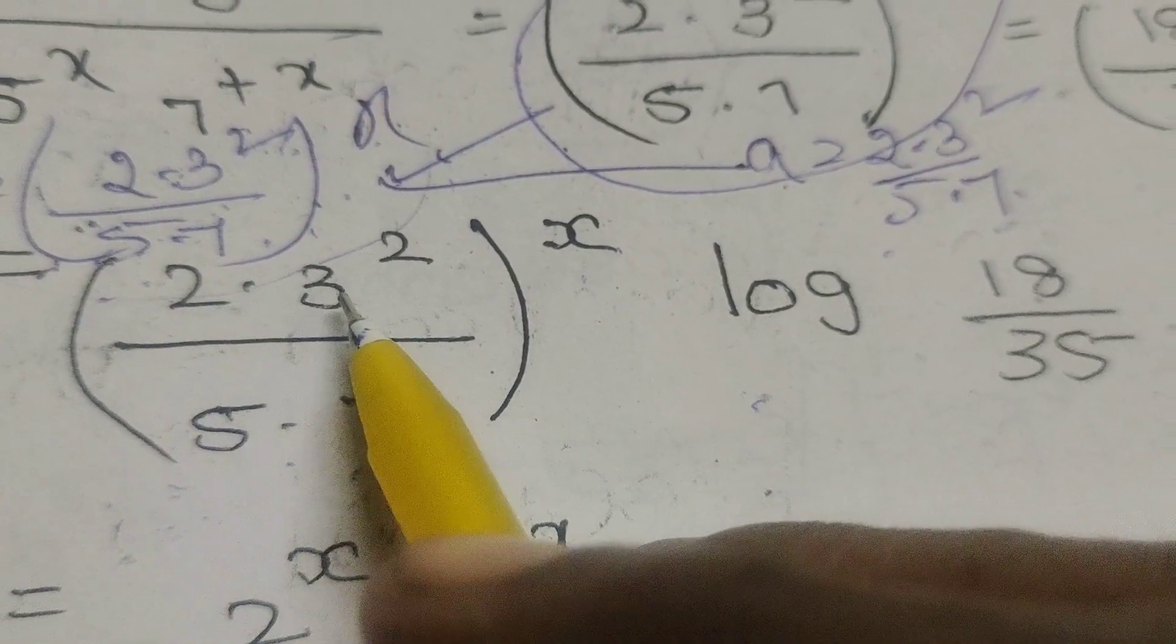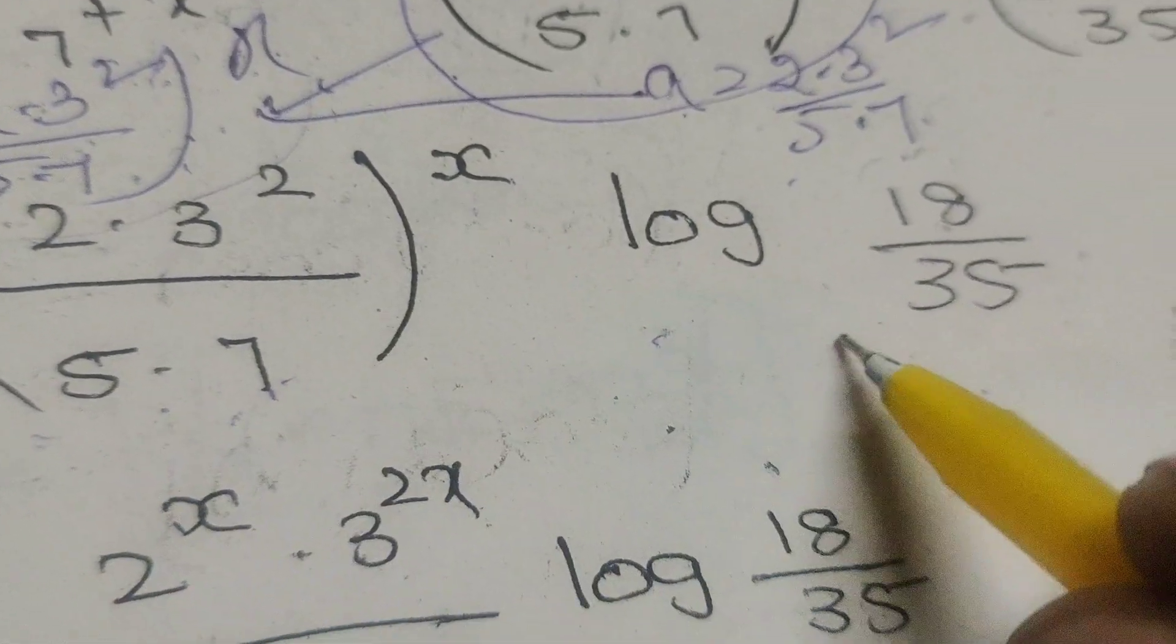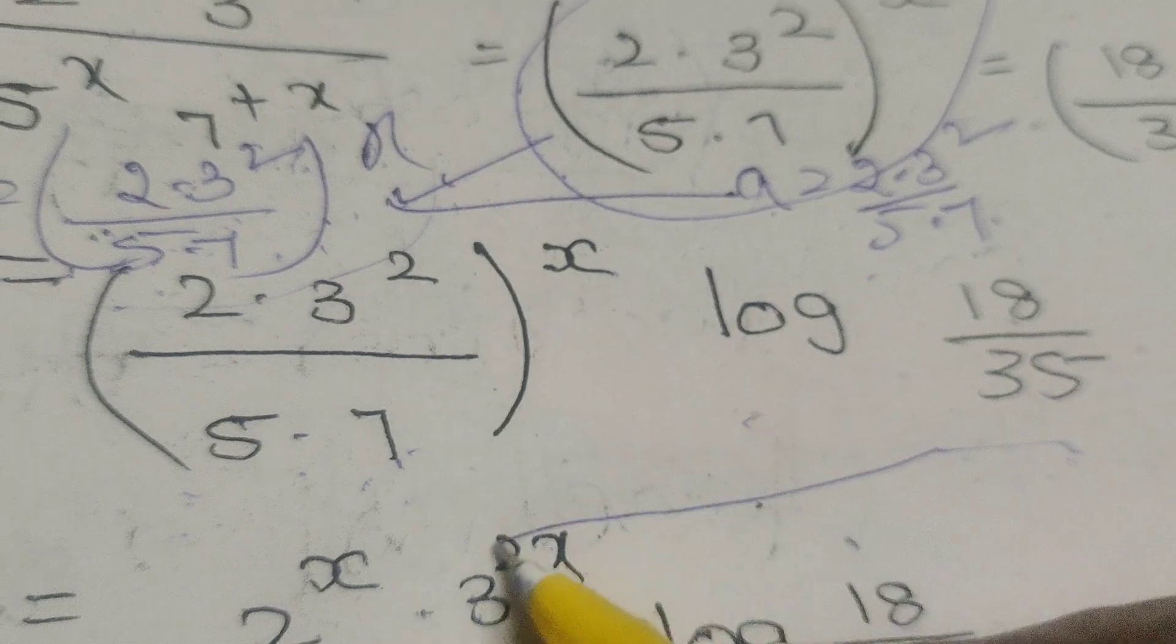Simplify this. 2 into 9 is 18. 5 into 7 is 35. Therefore, log a means log 18 by 35. This is the solution.